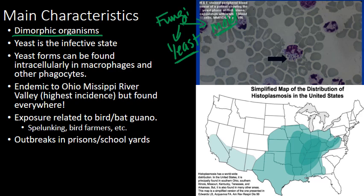It tends to grow as a mold at room temperature or cooler temperatures, and as a yeast in the body at higher temperatures. The yeast form is what we're actually going to see in our patients and is also the infective state of the organism — that's how you're actually going to be exposed to it in such a way that you might actually develop disease.